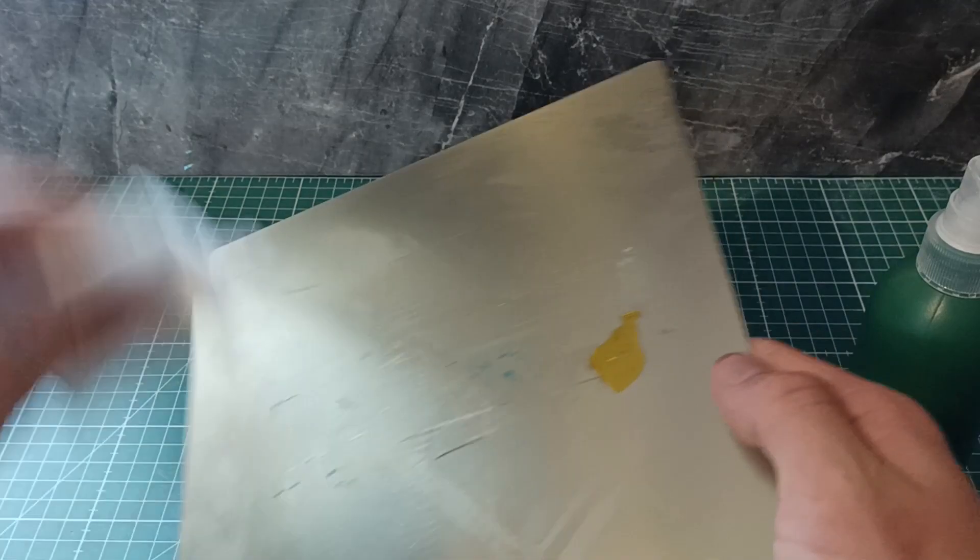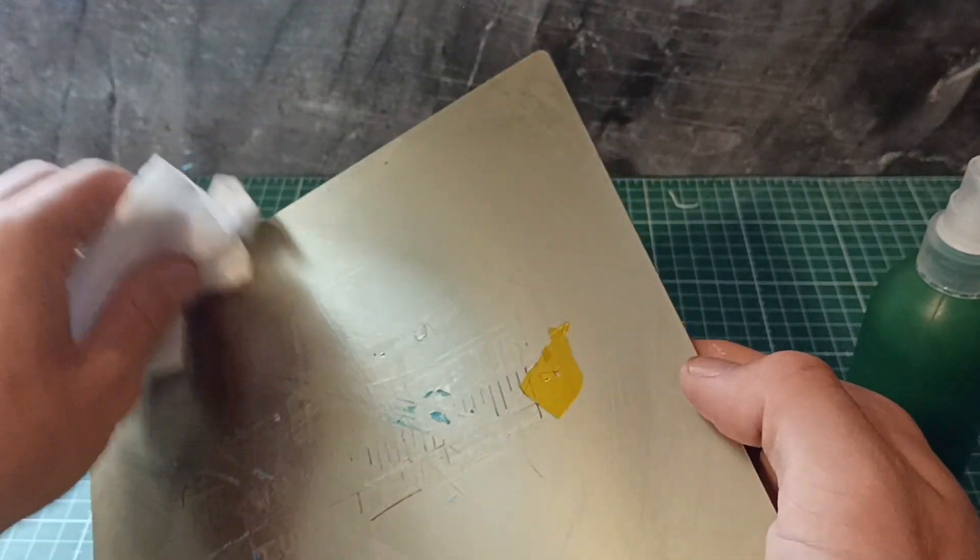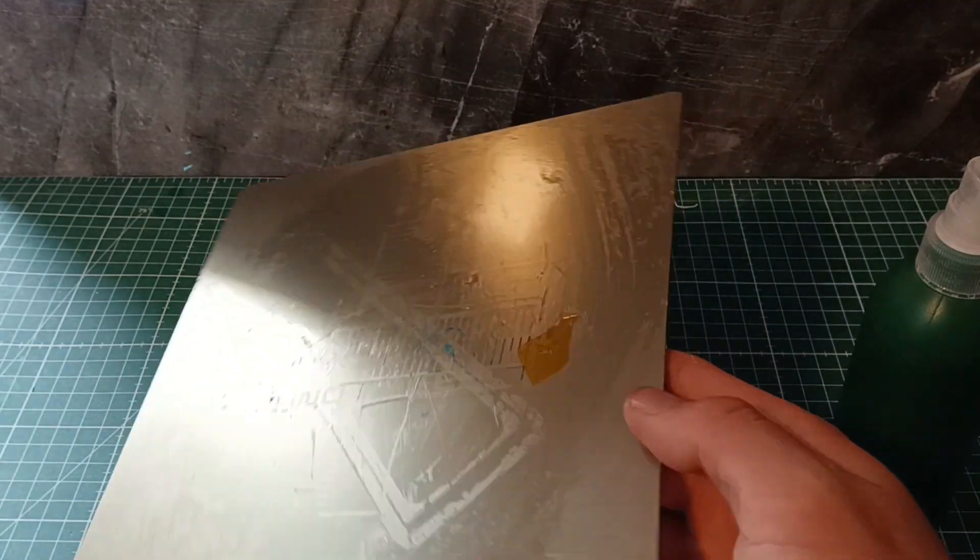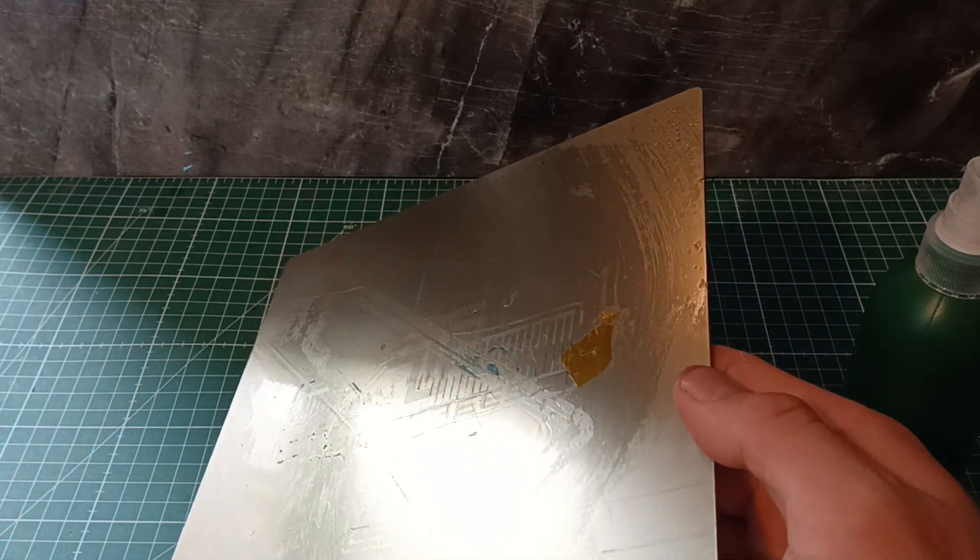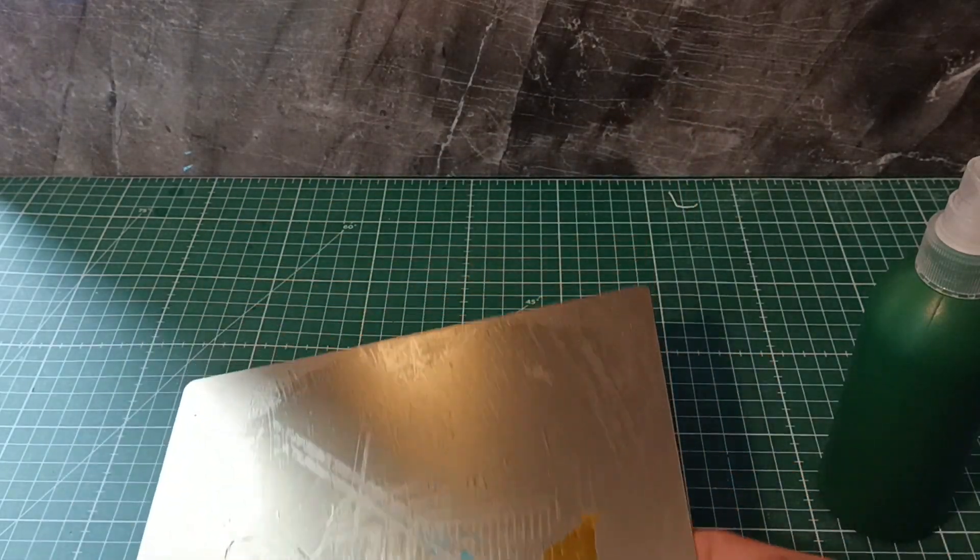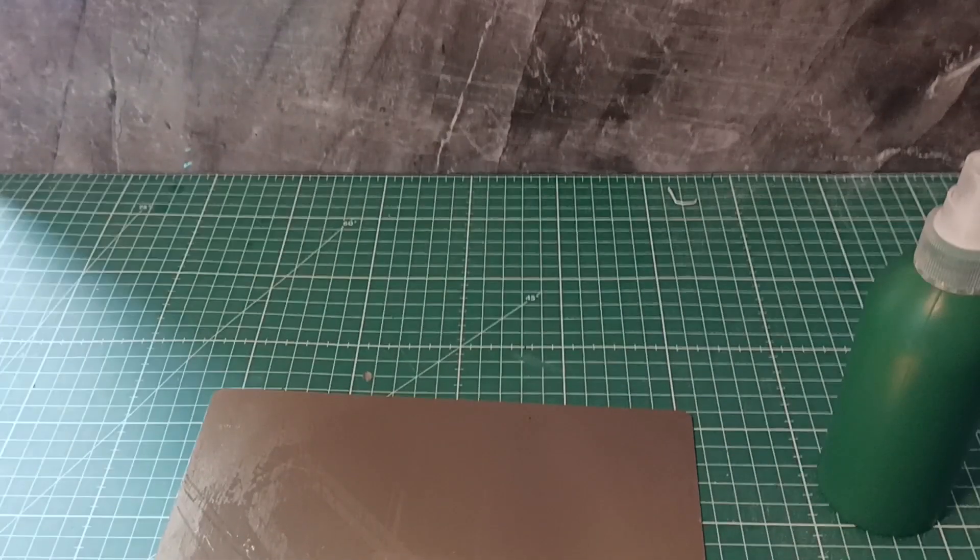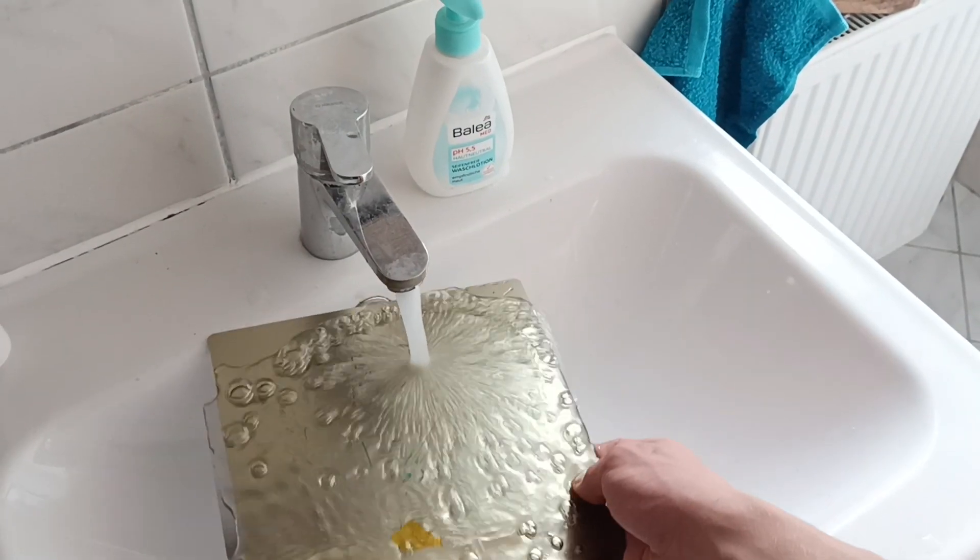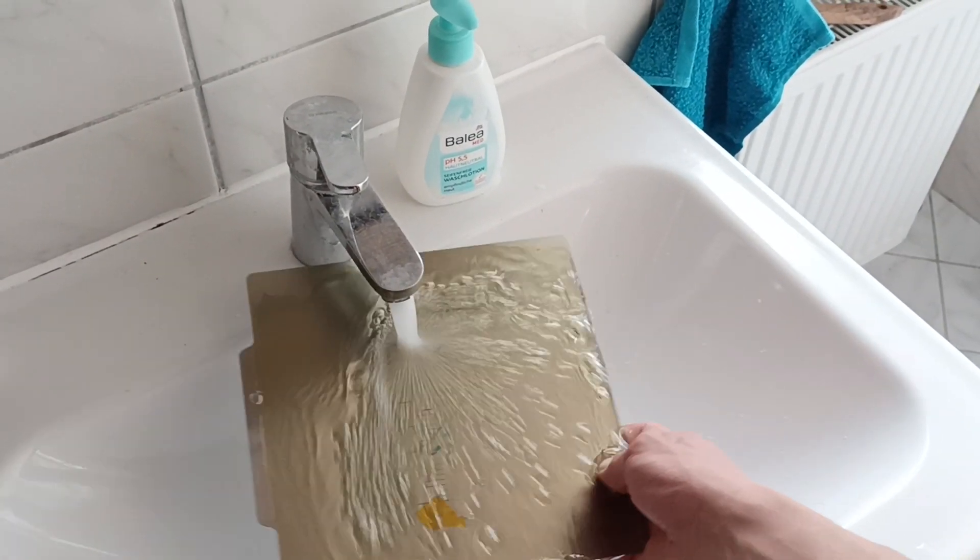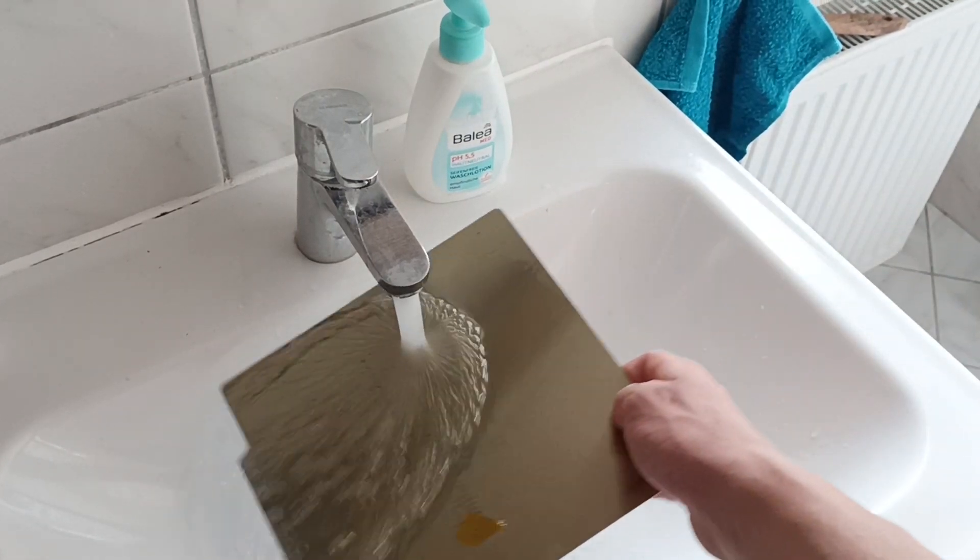You can use this glue on any bed surface. But especially glass, PEI, and G10 or FR4 profit from this, making them stick amazingly. To clean your adhesive off, just rinse your bed off under the sink. Or clean it using paper towels and isopropyl alcohol. Because it's water soluble.